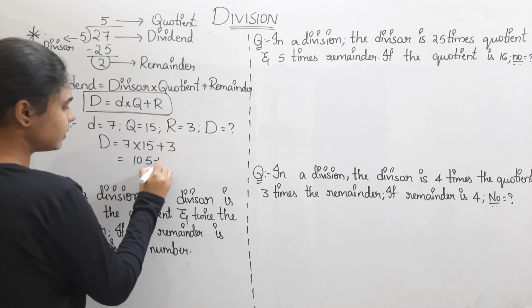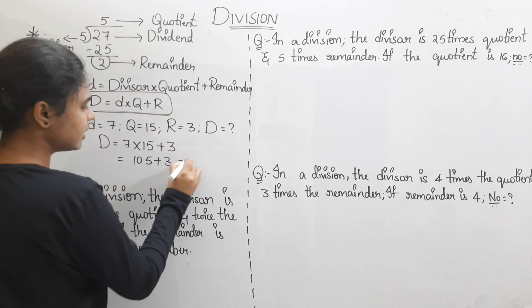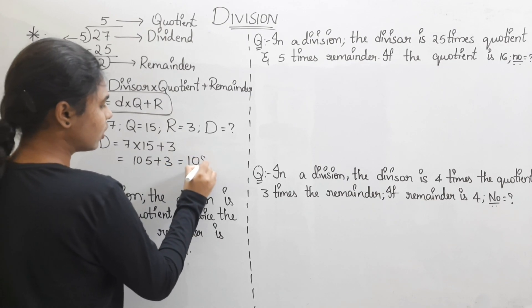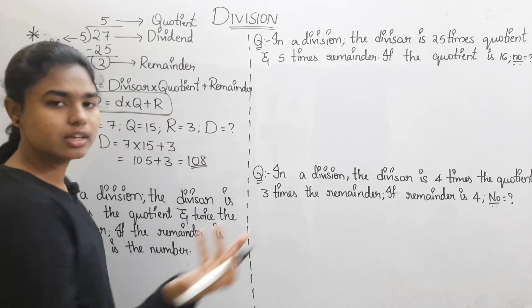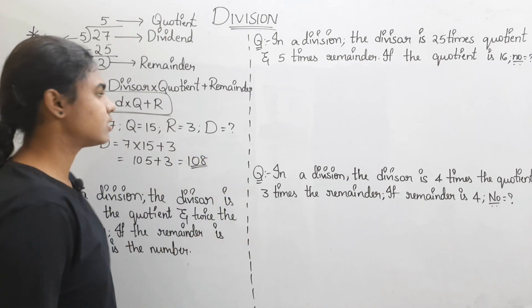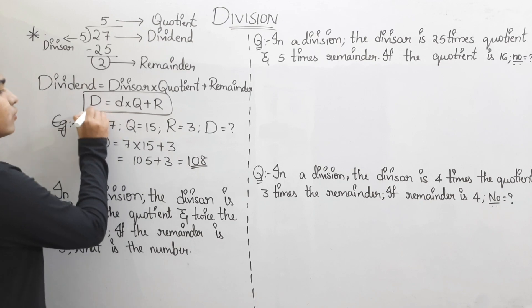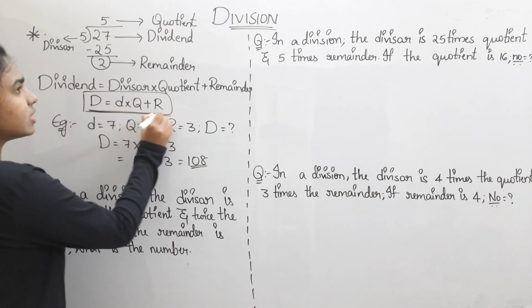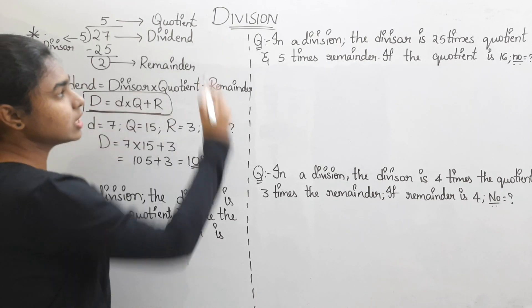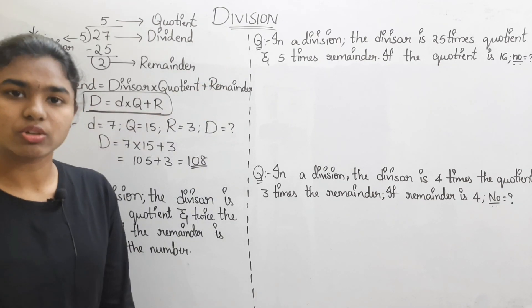So using the formula: 15 multiplied by 7 is 105, plus 3, that is 108. That is our answer. This formula is going to be used for all division topic questions.